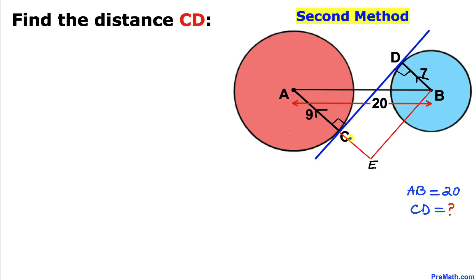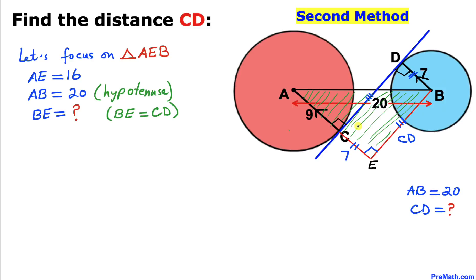I've constructed rectangle CDBE, where angle at each corner is 90 degrees. Since BD = 7, the side CE = 7 as well. The side BE is equal in length to CD. Now let's focus on the right triangle AEB. The side AE = 9 + 7 = 16, so AE = 16, and AB = 20.